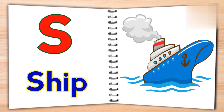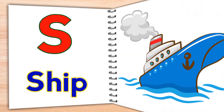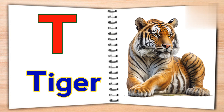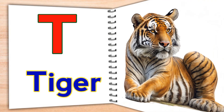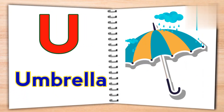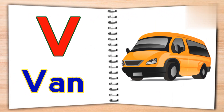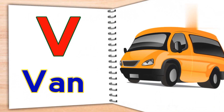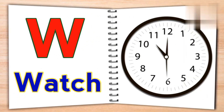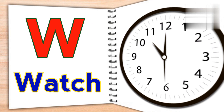R for rose, S for sheep, T for tiger, U for umbrella, V for van, W for watch.